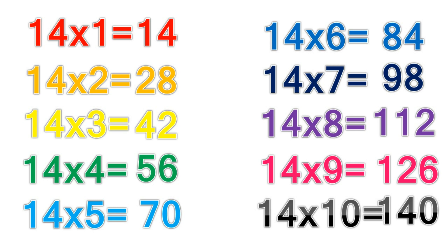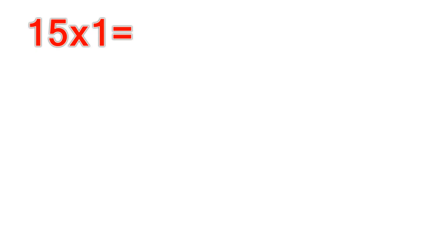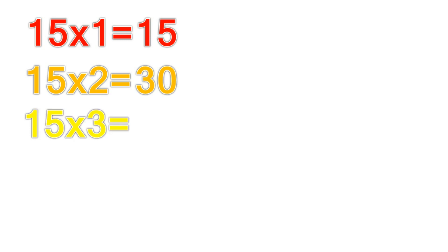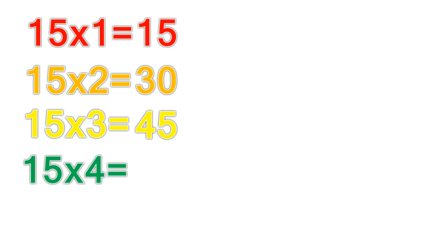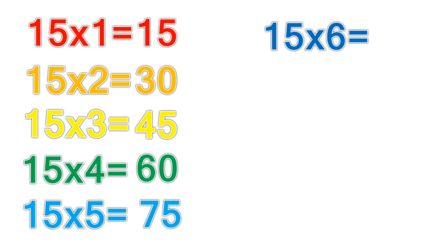15 times table. 15 times 1 equals 15. 15 times 2 equals 30. 15 times 3 equals 45. 15 times 4 equals 60. 15 times 5 equals 75. 15 times 6 equals 90.